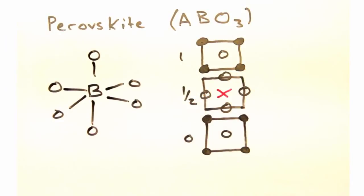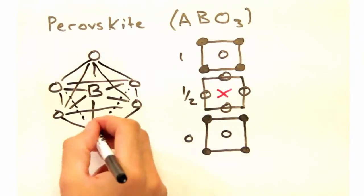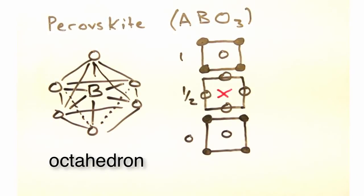Now, imagining I connect the oxygen atoms above and below to the ones in plane, I can see they form an octahedra, with the B atom sitting smack dab in the middle.